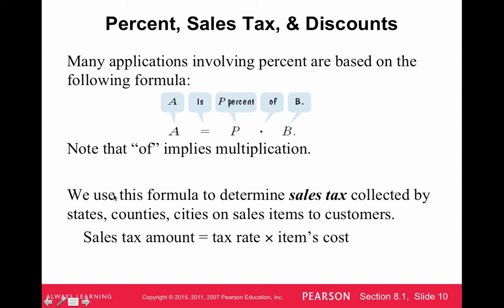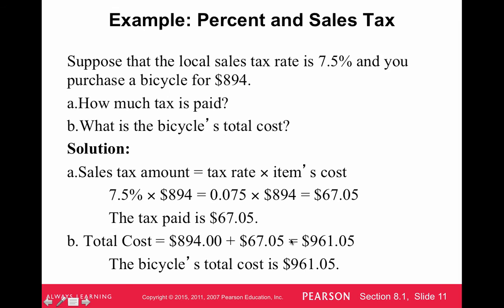The thing that they're saying here is we use this formula to determine sales tax collected by states, counties, cities on sales items to customers. So, another way of looking at it is A, is the sales tax amount is equal to the tax rate as a decimal times the item cost. It's a percent of the item's cost. So, it says, suppose that the local sales tax rate is 7.5% and you purchase the bicycle for $894. How much tax is paid and what would be the bicycle's total cost? So, this is a pretty important application just to see how much you're actually going to totally pay and how much tax you're paying.